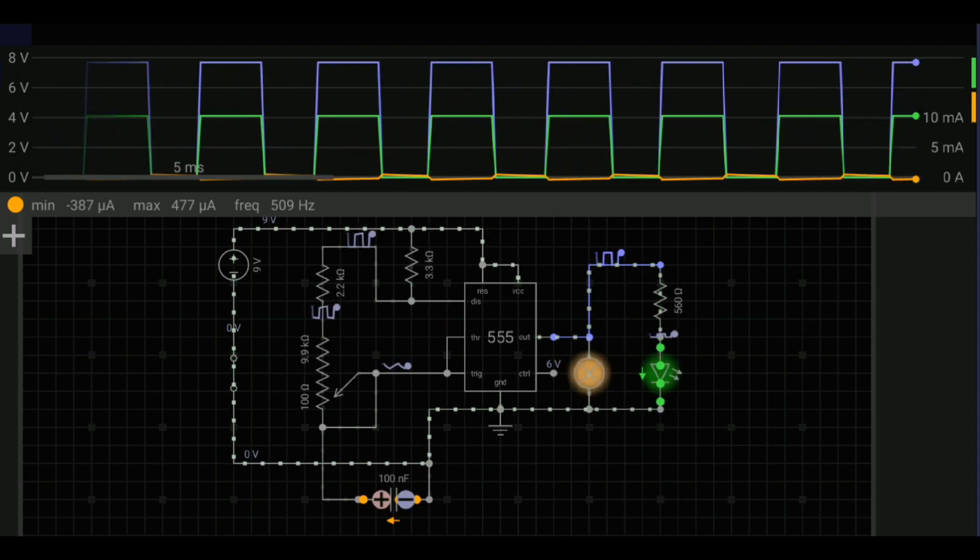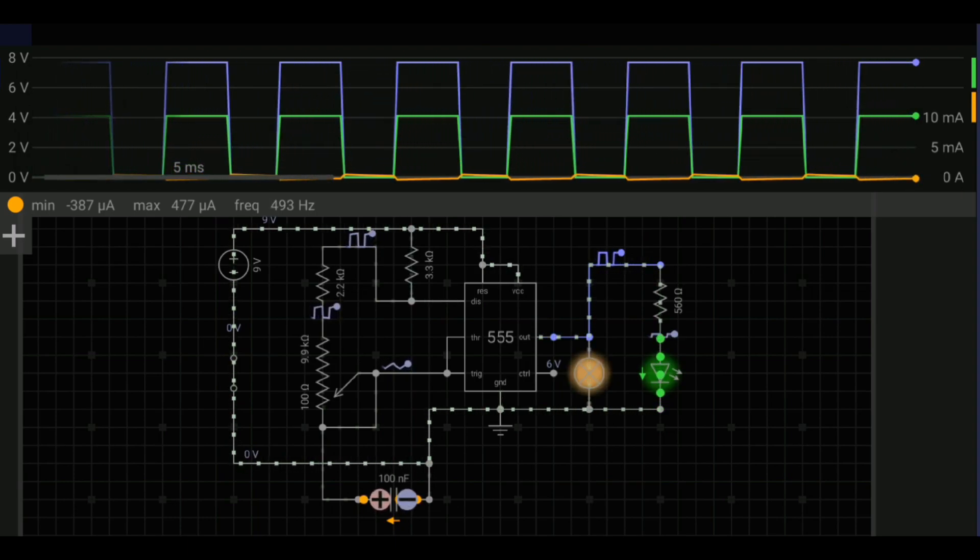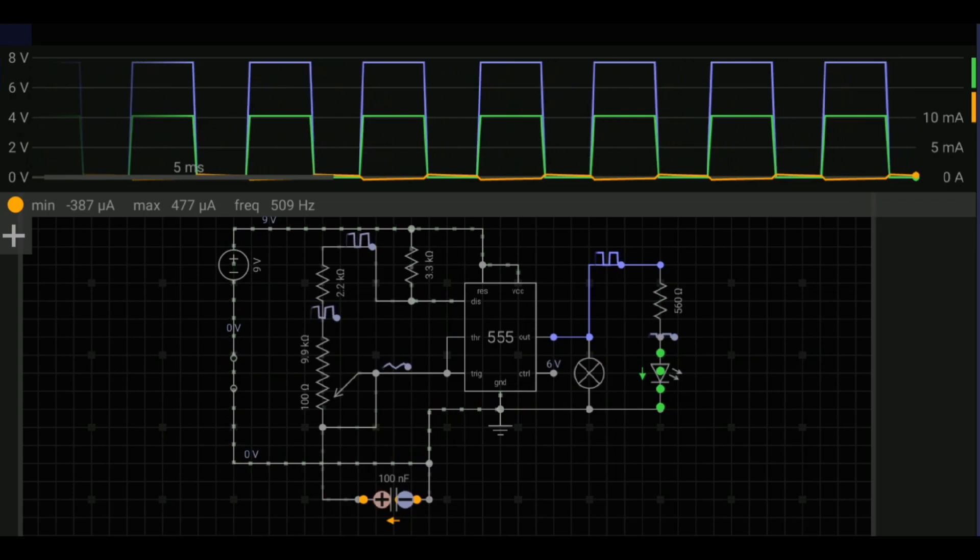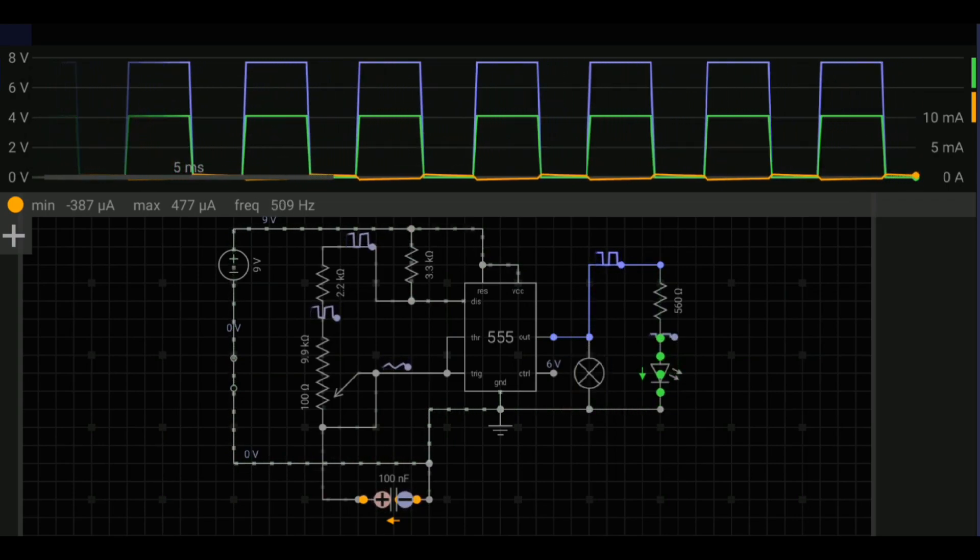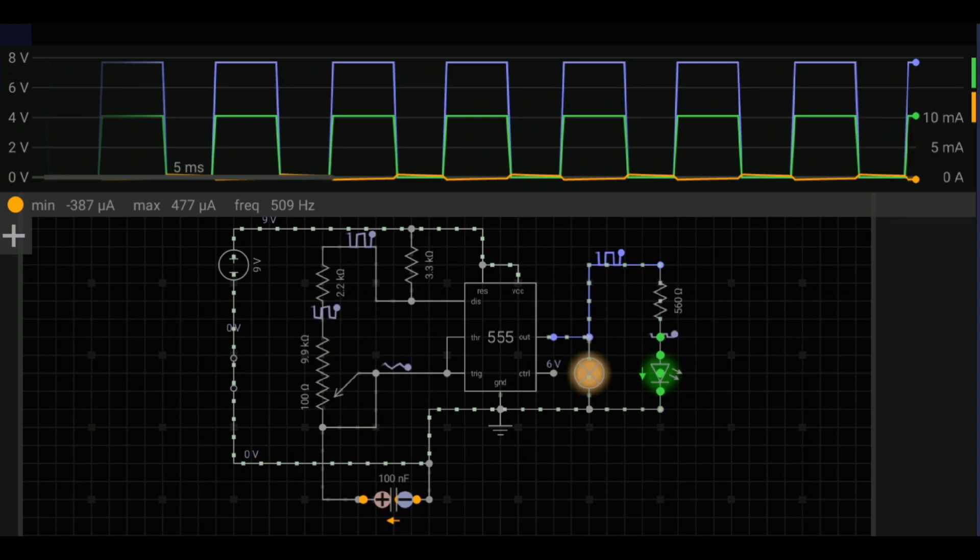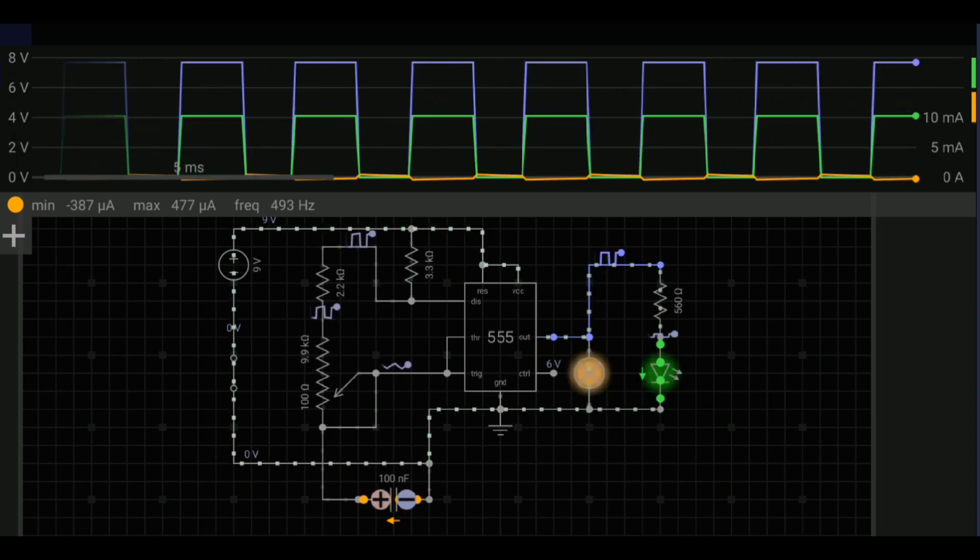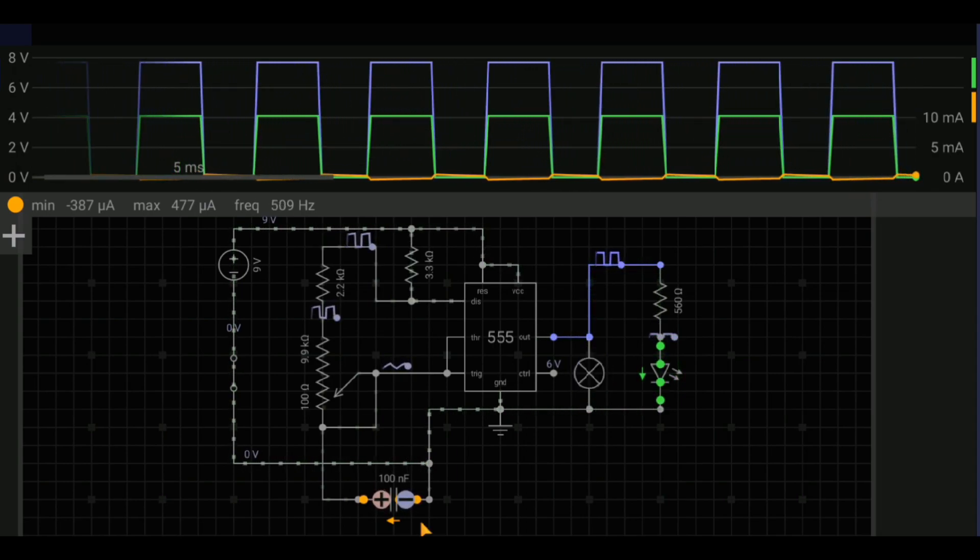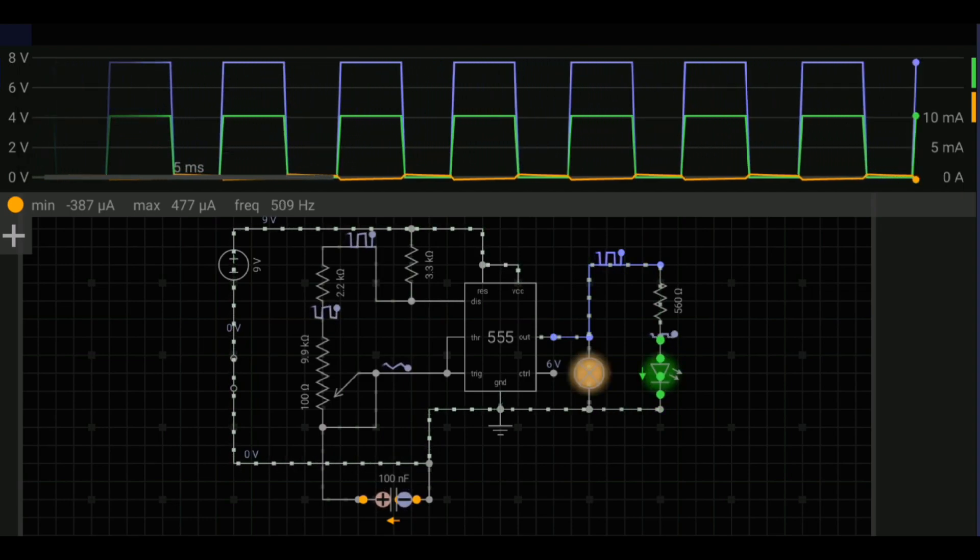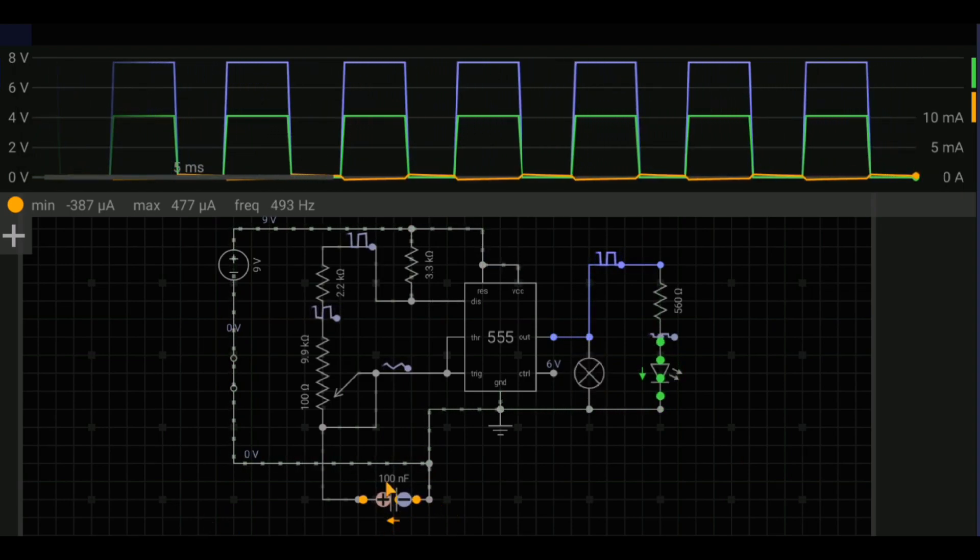Circuit connections: Connect pin 1 of the 555 IC to the ground. Connect pin 8 of the 555 IC to the positive terminal of the power source. Connect pins 2 and 6 together, threshold and trigger.